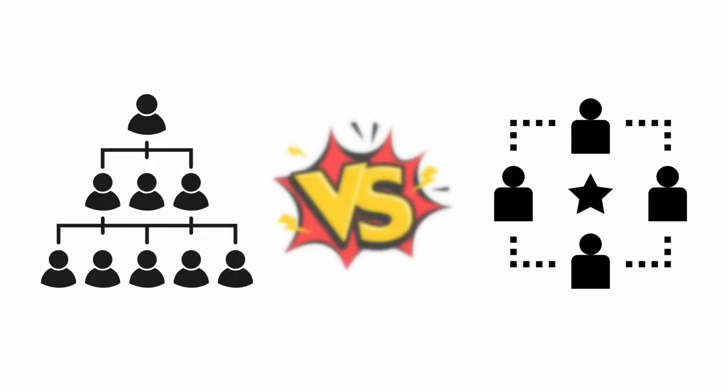Growth becomes harder, clients start slipping through the cracks, and suddenly you're wondering why you're putting in all these hours but not seeing the results you want. That's why a future-based org chart isn't just a nice-to-have — it's a must-have for serious growth. So let's talk about two common ways agencies structure their teams: a traditional hierarchical structure and a pod-style structure.